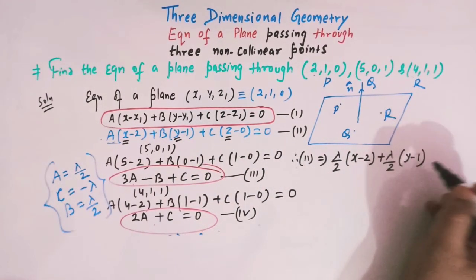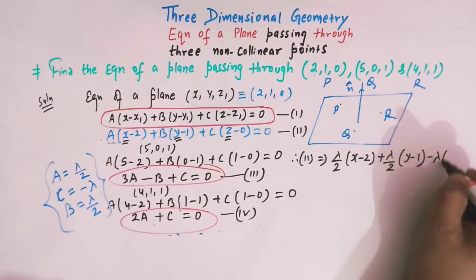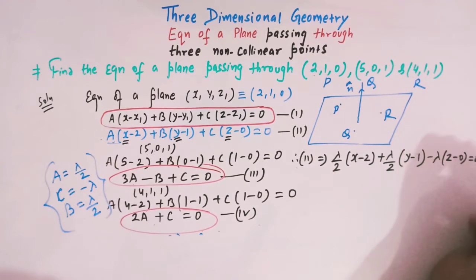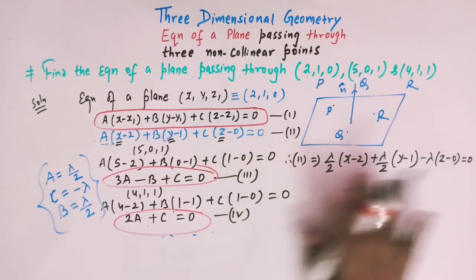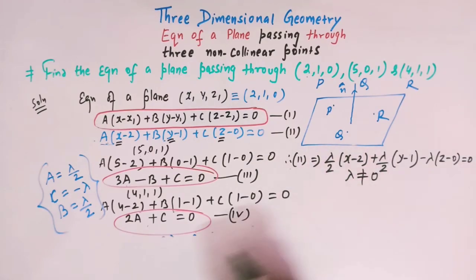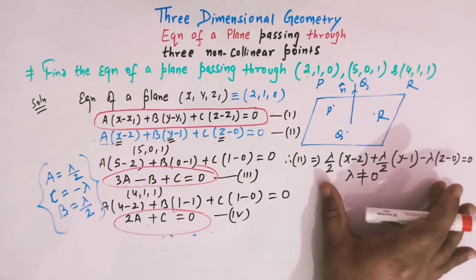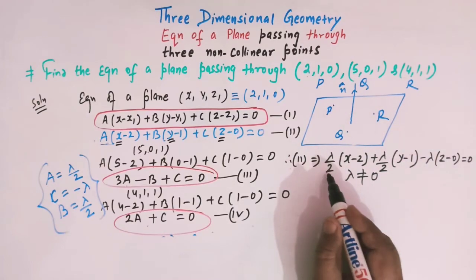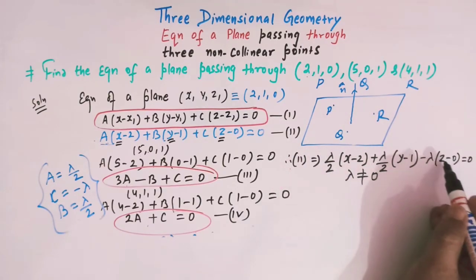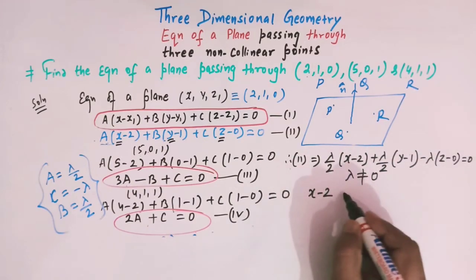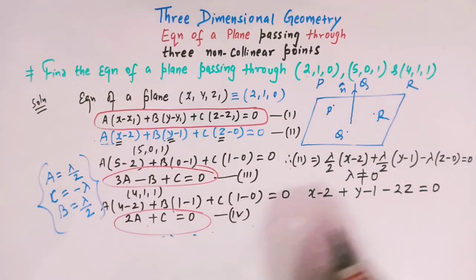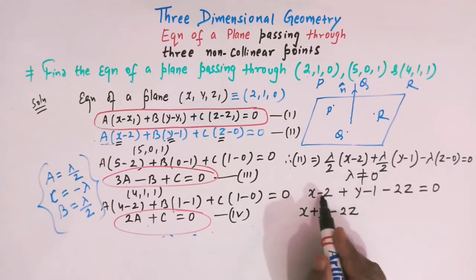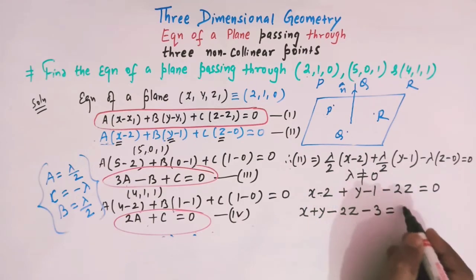Substituting these into equation (2): (λ/2)(x − 2) + (λ/2)(y − 1) + (−λ)(z − 0) = 0. Since λ ≠ 0, we divide through by λ and multiply by 2, giving: (x − 2) + (y − 1) − 2z = 0. Rearranging: x + y − 2z − 3 = 0.